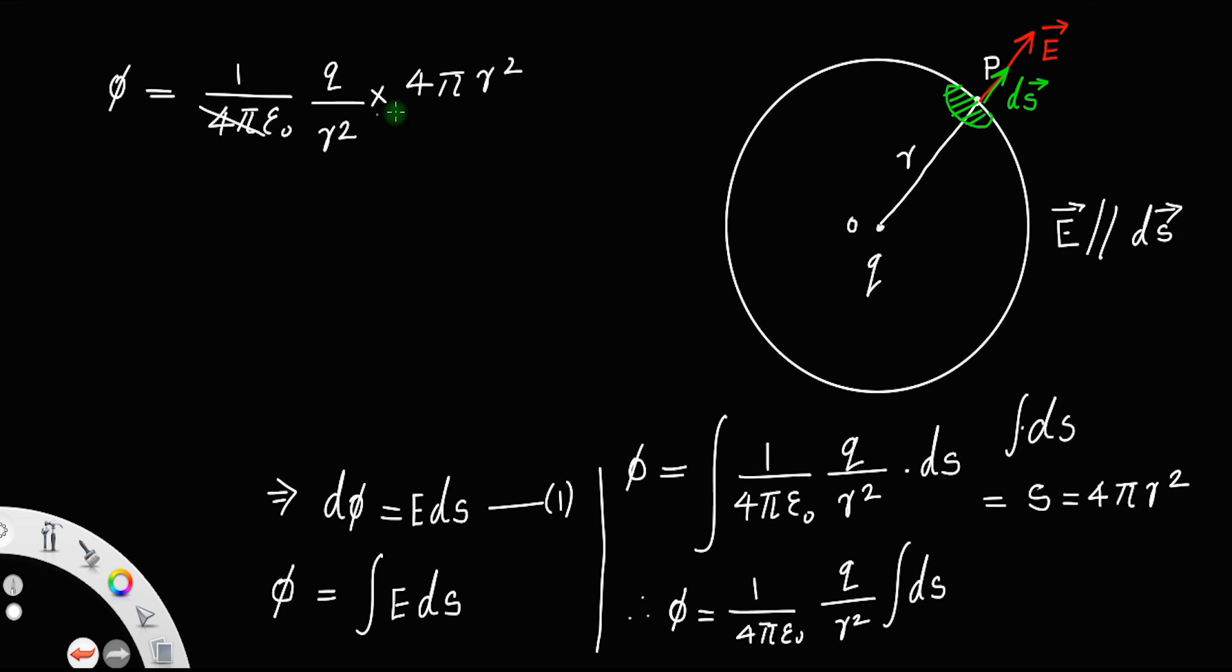You can cancel this 4π and this R square, and the final expression will be φ equals q by ε₀. And this is Gauss's theorem, or you can write this as φ equals 1 by ε₀ times q.